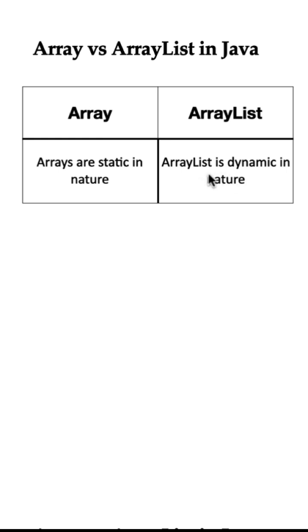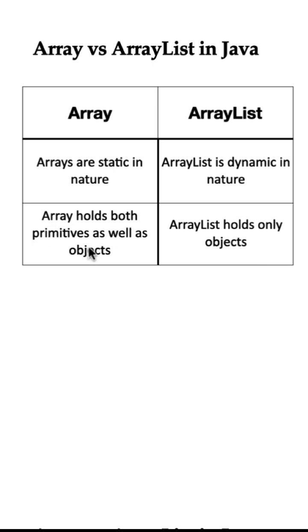Arrays can hold both primitive data types and objects, whereas ArrayList can only contain object elements. It cannot hold primitive types directly, but we can use wrapper classes to store primitive types in ArrayList.